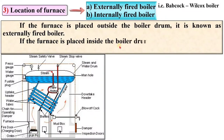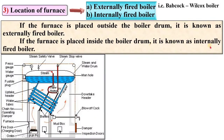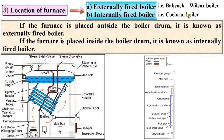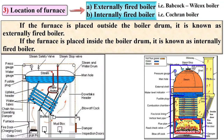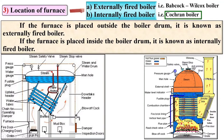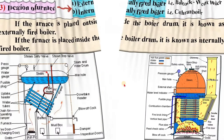If the furnace is placed inside the boiler drum, it is known as an internally fired boiler. The example is the Cochran boiler, and here you can see the furnace is inside the boiler drum, that's why it is called an internally fired boiler.